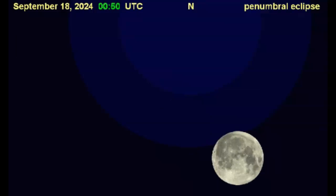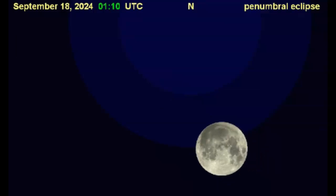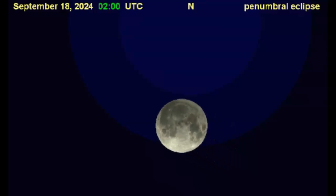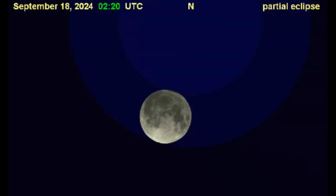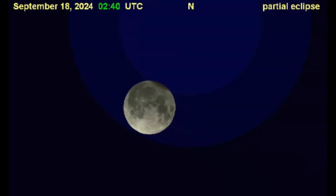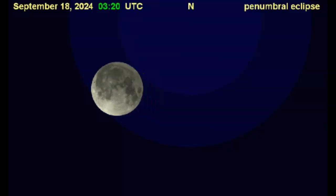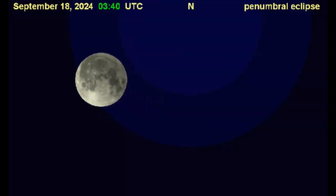This animation shows the moon grazing Earth's shadow during the early UTC hours of September 18th, but that would be September 17th tomorrow here in the U.S. The entire eclipse can be viewed in most of the Americas, Greenland, Europe, Africa, and much of the Middle East.